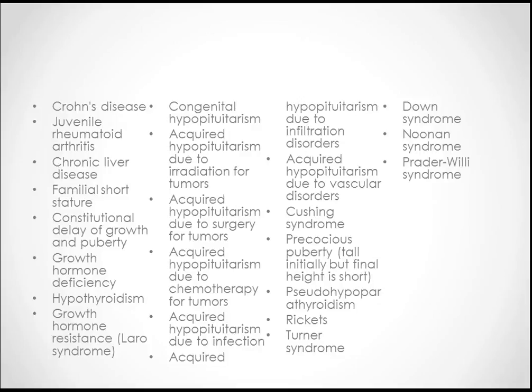Familial short stature is very important and the most common cause for short stature in children. The syndromes you need to remember are Down syndrome, Noonan syndrome, Prader-Willi syndrome, and Turner syndrome. There are other syndromes in the next slide, which I will show you.